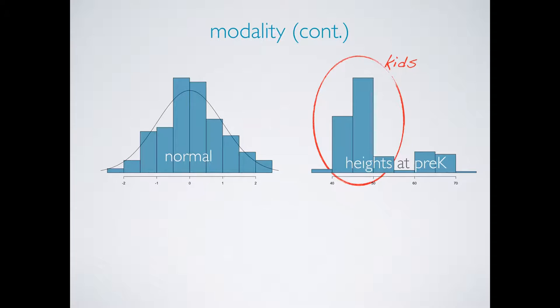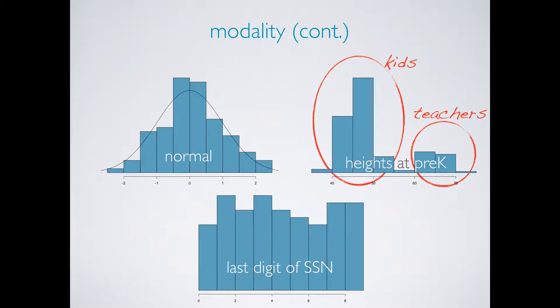A uniform distribution usually means no apparent trend in the data, that high and low values of the variable are equally likely to occur. Here's a distribution of last digits of a random sample of people's social security numbers. As expected, the data show no trend. It's just as likely to have a social security number that ends with a zero as a six or a nine.